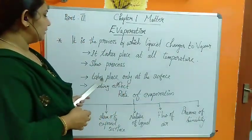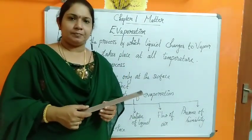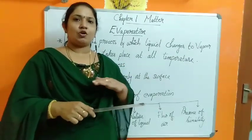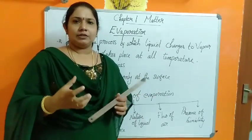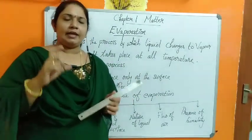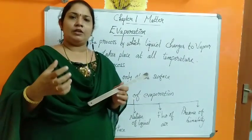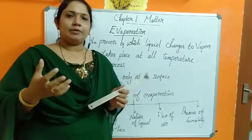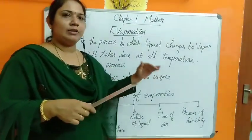The third difference is that evaporation takes place only at the surface. If you place a bucket of water, the water will evaporate only from the top layer. But in case of boiling, once the entire water reaches 100 degrees Celsius, the water starts boiling throughout the liquid, not just from the surface.